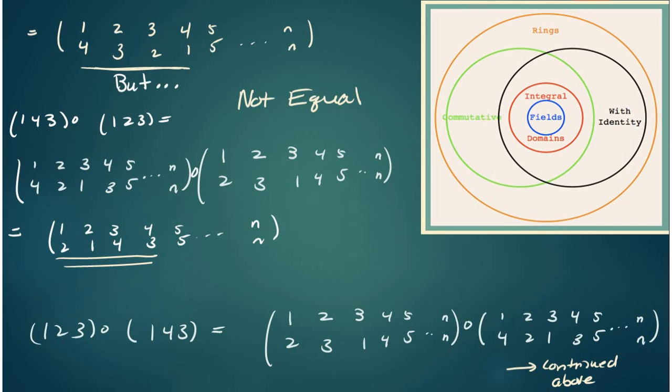See, those two pieces that one underlined are not equal. So therefore, (1, 2, 3) composed with (1, 4, 3) is not equal to (1, 4, 3) composed with (1, 2, 3) for any of the A_Ns. So the A_Ns in general is not abelian.